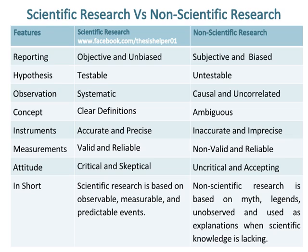Concept in scientific research has clear definitions, whereas concept in non-scientific research is ambiguous. Instruments in scientific research are accurate and precise, whereas instruments in non-scientific research are inaccurate and imprecise. Measurements in scientific research are valid and reliable, whereas measurements in non-scientific research are non-valid and unreliable. Attitude in scientific research is critical and skeptical, whereas attitude in non-scientific research is uncritical and accepting.